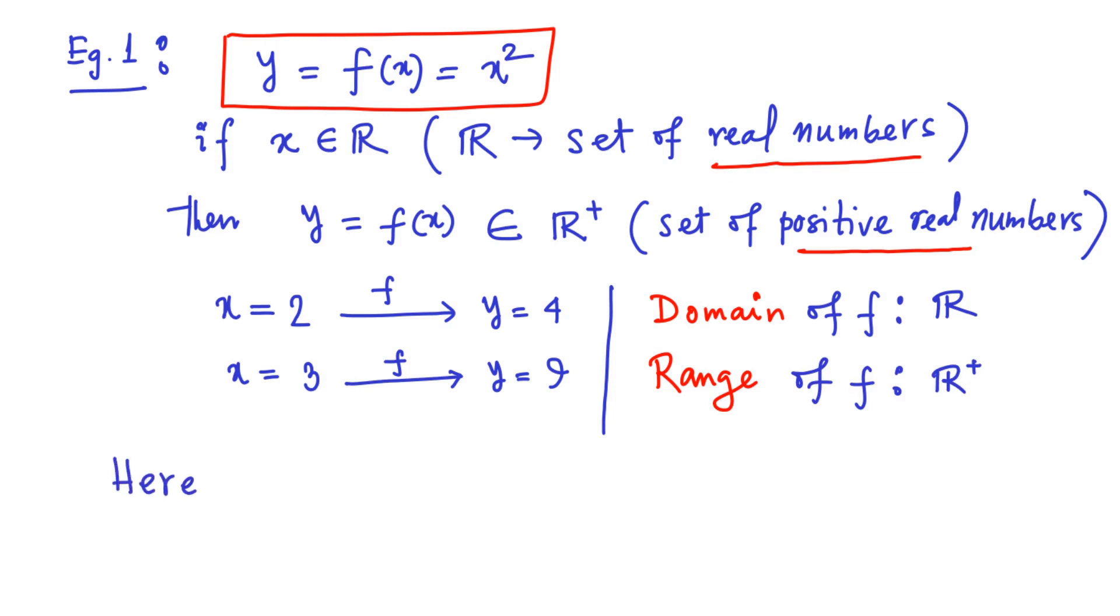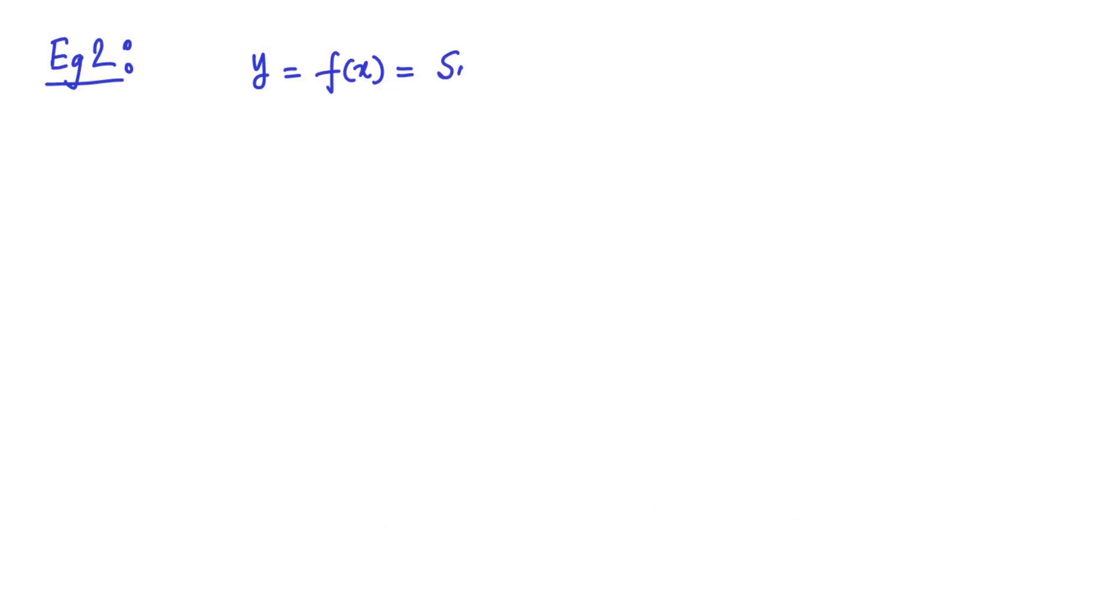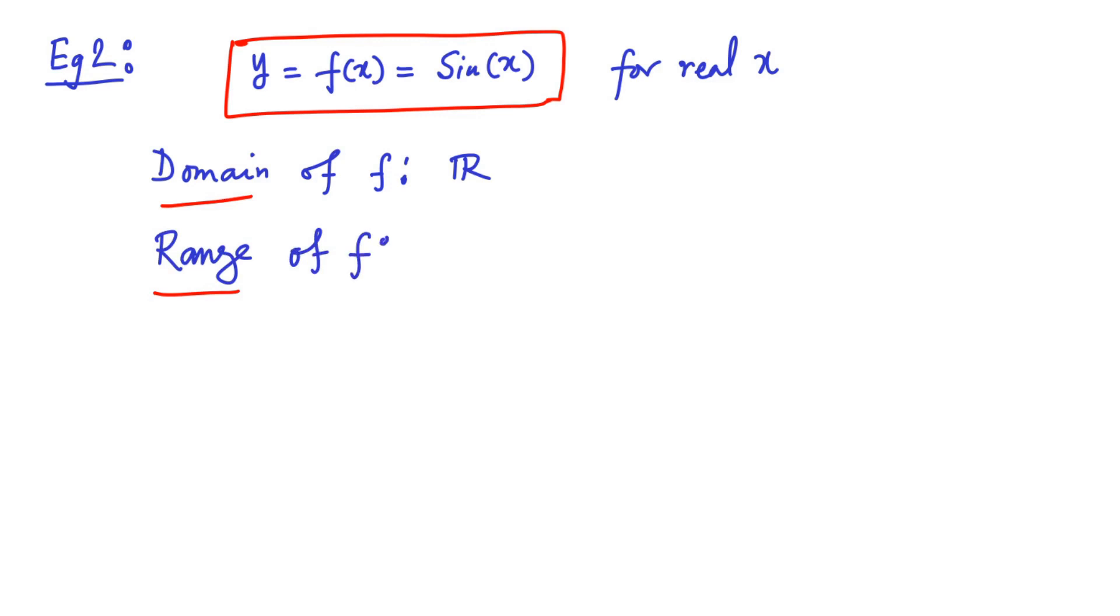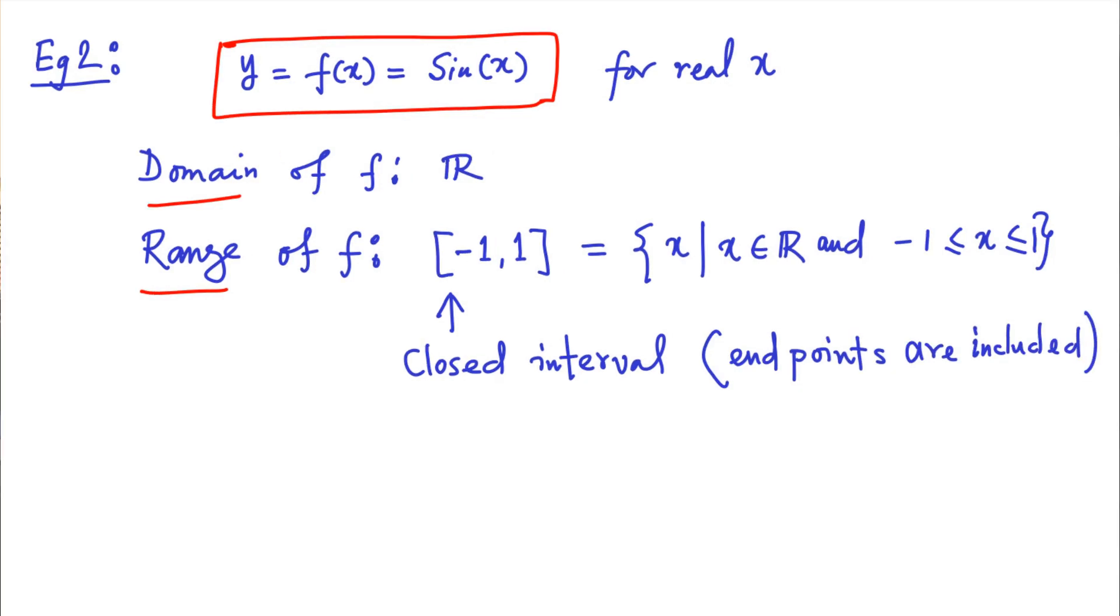Here, the function F is read as Fx is a real valued function over real number X. Let me take another example. Y equal to Fx equal to sin X for real X. Here, domain of the function F is the set of real numbers R. On the other hand, given sin X takes values between minus 1 to plus 1, the range of the function Fx here is the closed set minus 1 to 1. Here, the set includes both the endpoints, that is, minus 1 and 1.